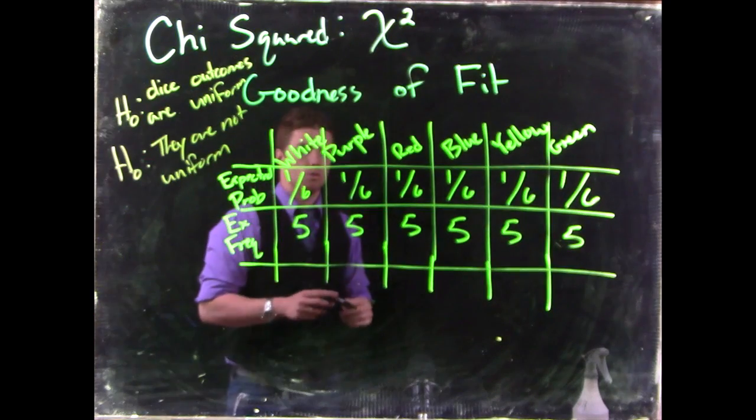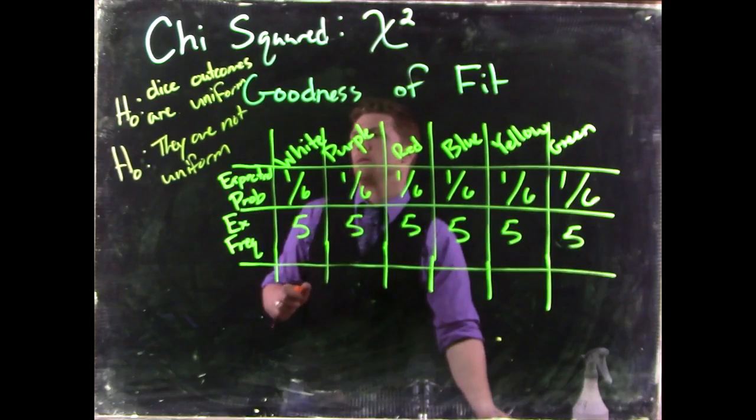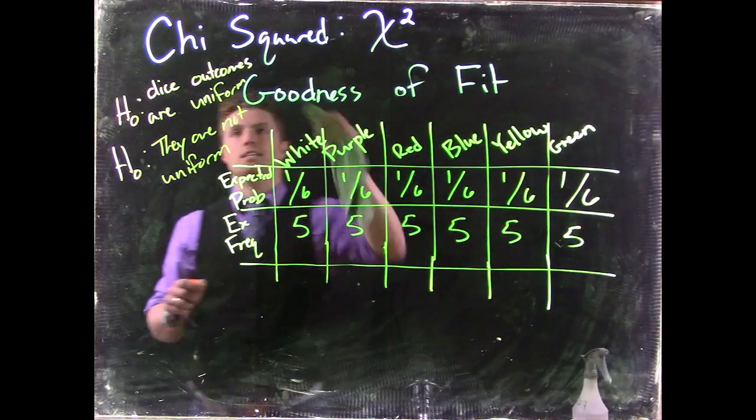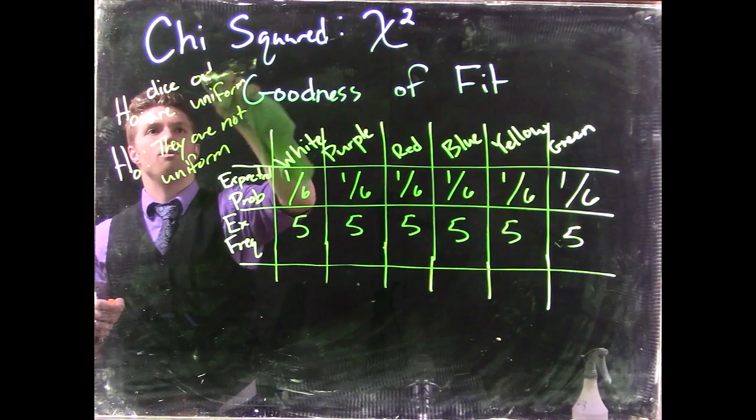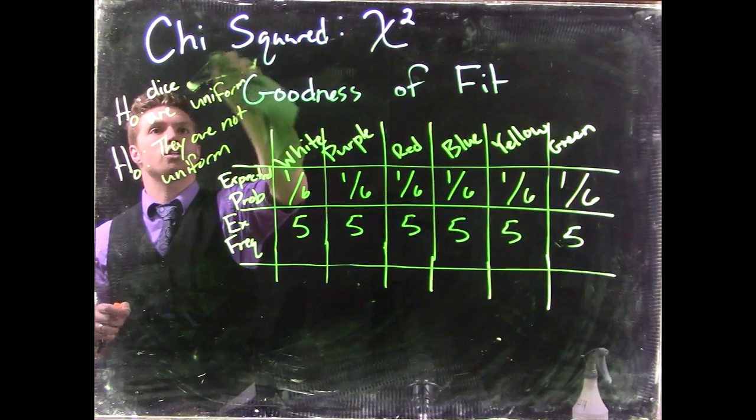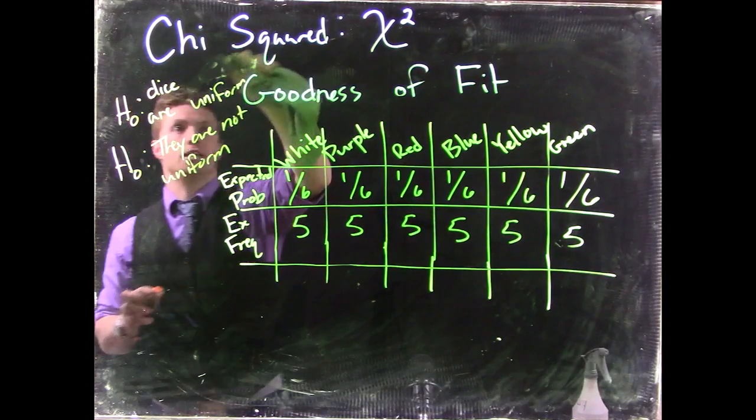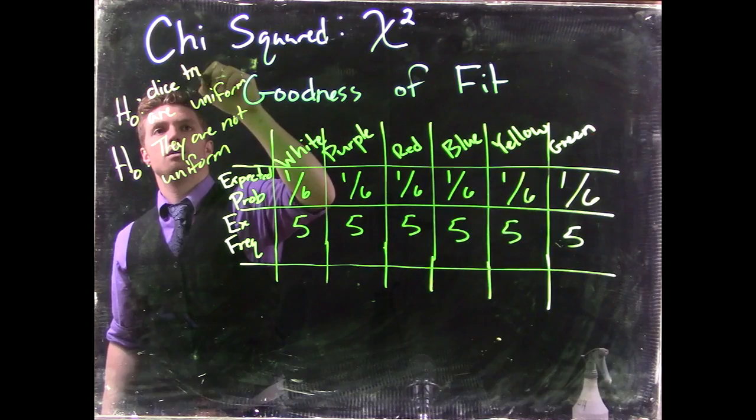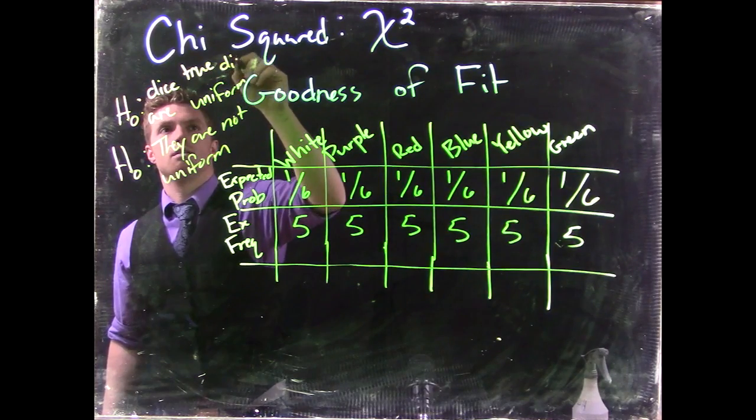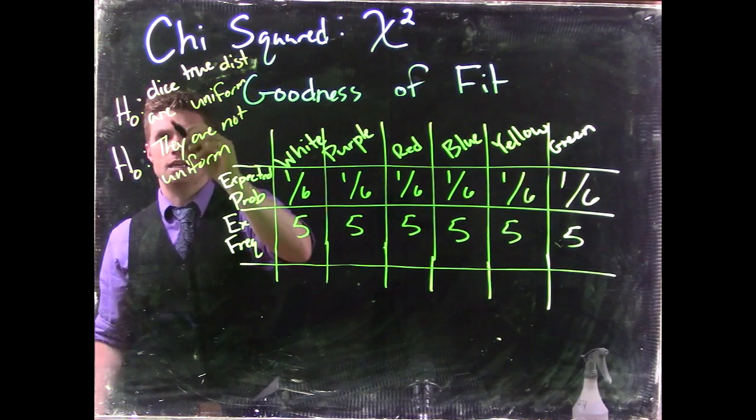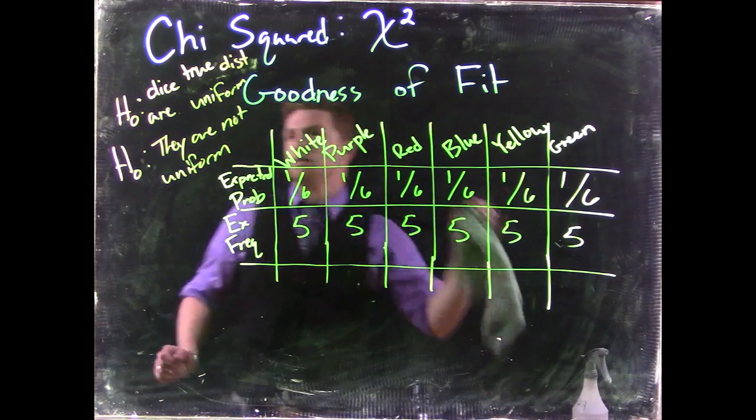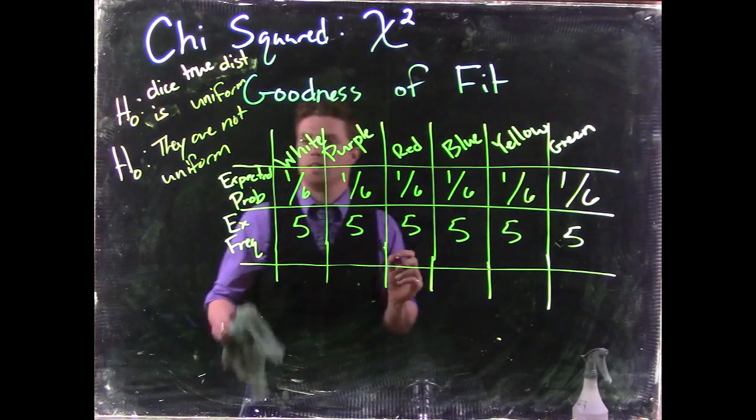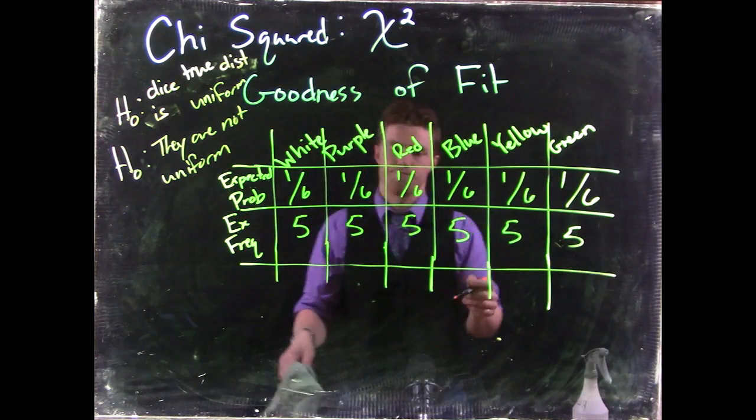Now we should probably talk about the dice distribution instead of dice outcomes. Maybe the dice true distribution, so we make sure that we're talking about the population parameter. So dice true distribution is uniform, and the alternative is that it is not uniform.